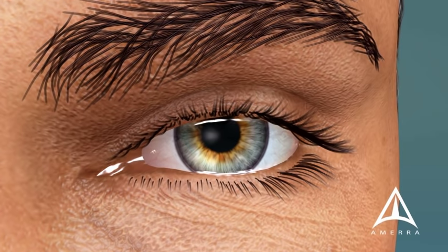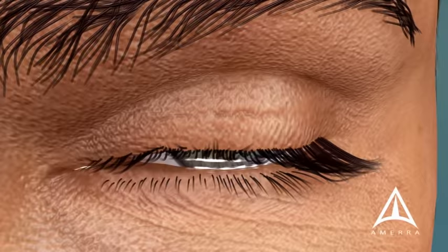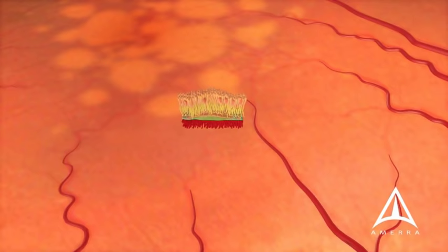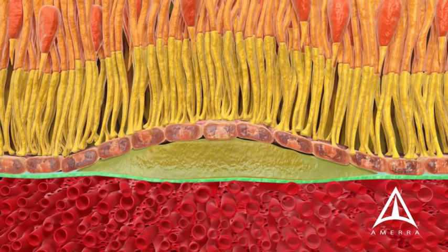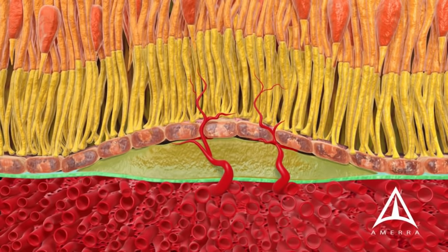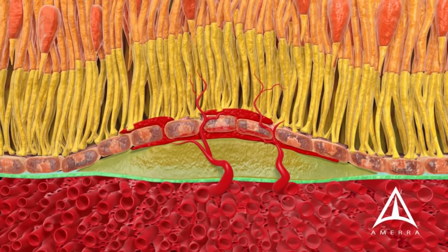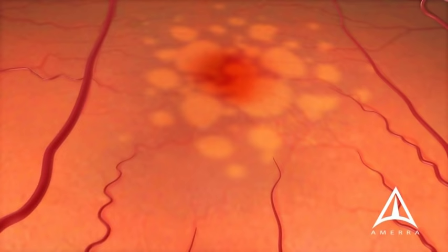Wet macular degeneration may develop in patients with the dry form of macular degeneration. In the wet form, blood vessels that are leaky and abnormal begin to grow into the retina. Unlike normal blood vessels in the rest of the body, those seen in wet macular degeneration cause swelling or bleeding into the retina.